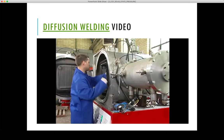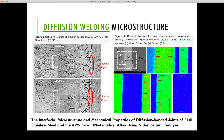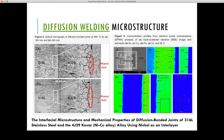Moving on to the microstructure of diffusion welding: this figure is from a research paper on diffusion bonding of SS316L stainless steel and 4J29 Kovar, a nickel-copper alloy. Between these two materials they placed nickel as an interlayer, then applied pressure, elevated temperature, and possibly vacuum to produce the diffusion weld.